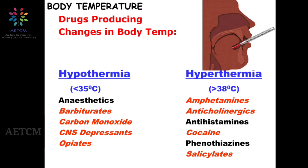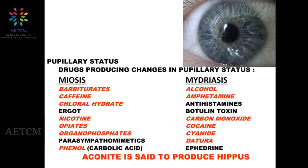Eye changes are very important both clinically and from an exam perspective. Drugs causing miosis include barbiturates, caffeine, chloral hydrate, ergot, nicotine, opiates, organophosphorus, and phenol — with organophosphates being the most common. Drugs causing mydriasis include alcohol, amphetamine, antihistamines, botulinum toxin, carbon monoxide, cocaine, cyanide, datura, and ephedrine. Hippus or dancing pupils — alternating between mydriasis and miosis — is associated with aconite.